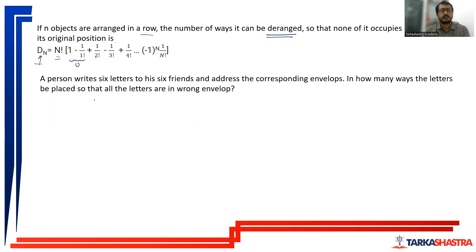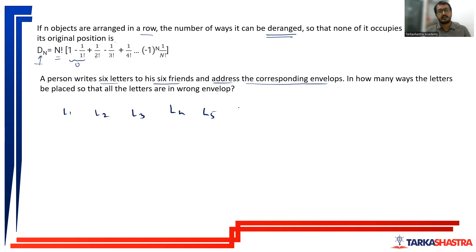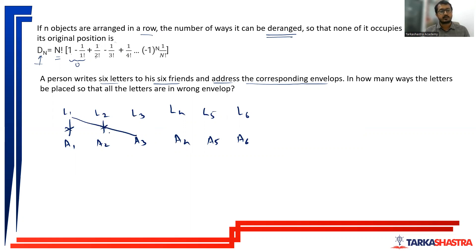Let us look at an example. A person writes six letters to his six friends and addresses the corresponding envelopes — these are the correct addresses: address 1, address 2, address 3, address 4, address 5, and address 6. None of the letters should get into the proper address envelope. Letter 1 can get into address 3 or address 4 envelope. All such possibilities are valid, but letter 1 should not go into address 1, and letter 5 should not go into address 5.